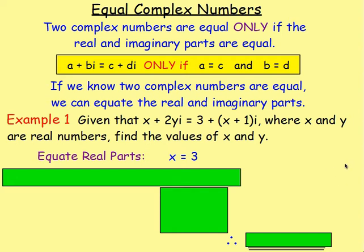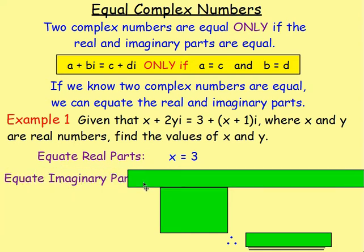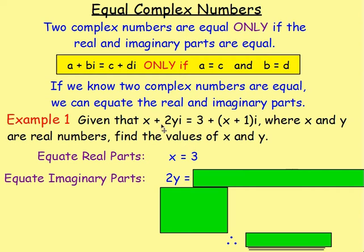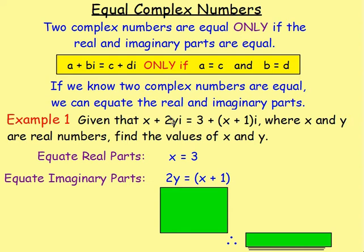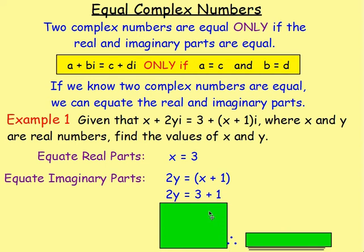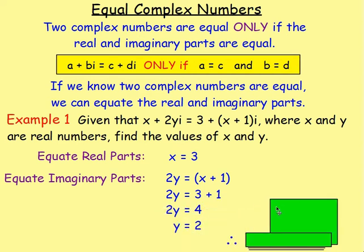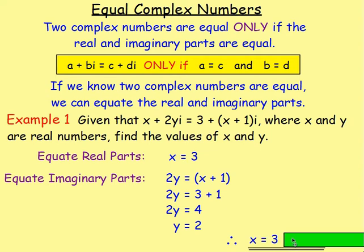After we equate the real parts, we equate the imaginary parts. The imaginary part on the left is 2y; on the right it's x + 1 — just taking the coefficient of i. Since 2y = x + 1 and x = 3, we get 2y = 4, so y = 2. Therefore x = 3 and y = 2.